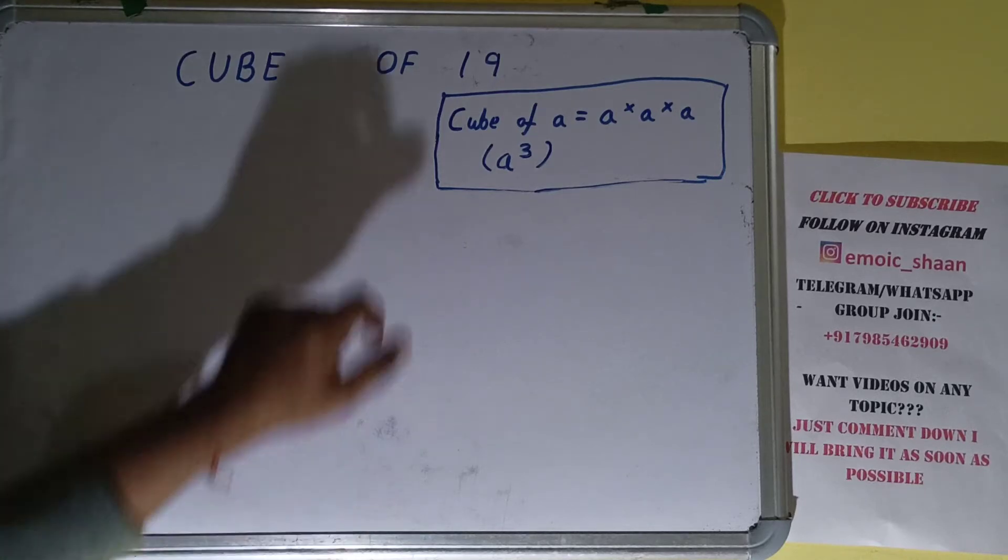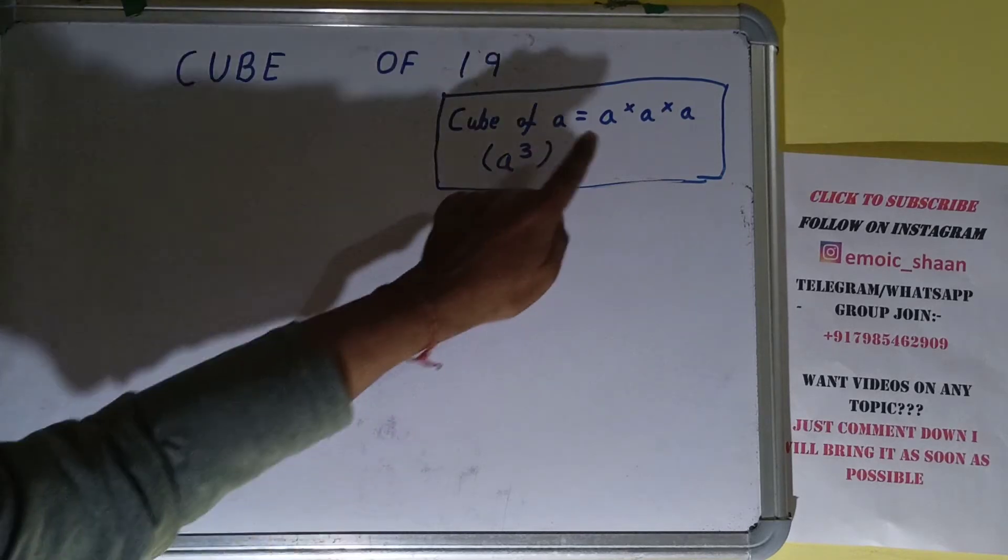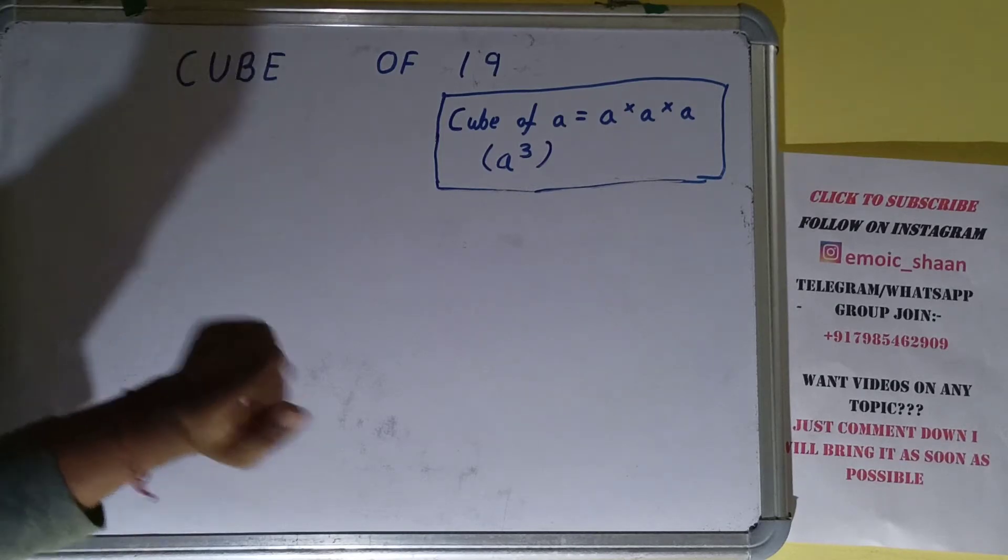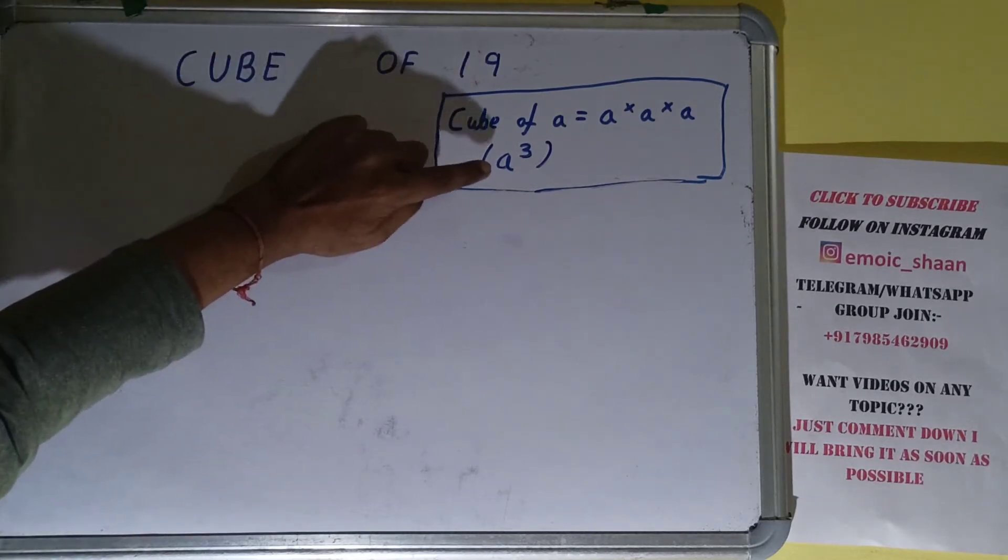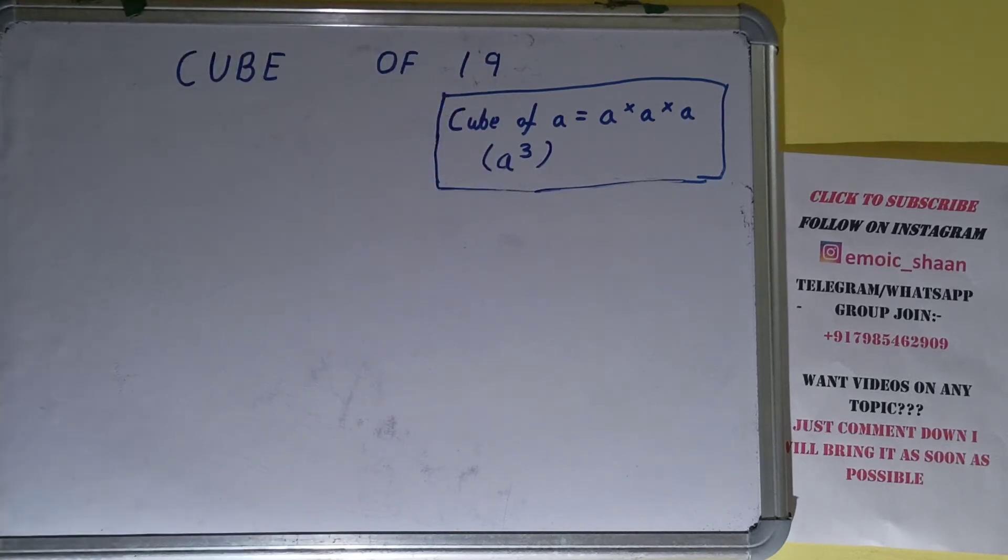Let's say you have to find cube of a, where a is any integer. Then you need to do a into a into a, basically multiply the number itself three times. You can write cube of a or as a cube - these have the same meaning.